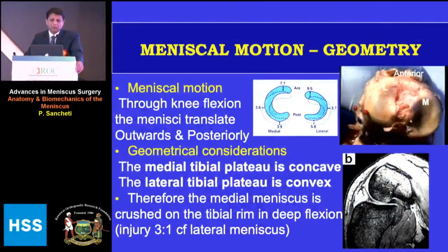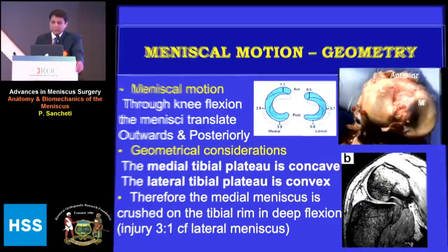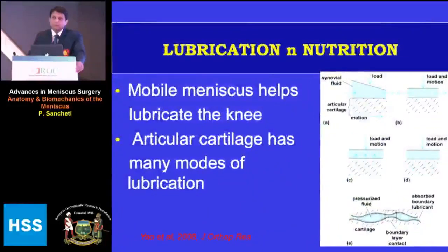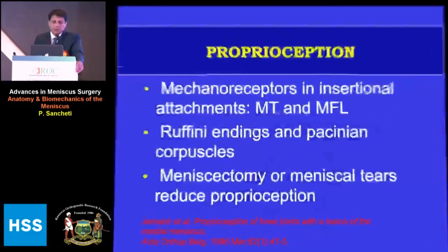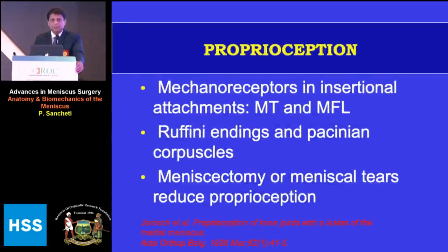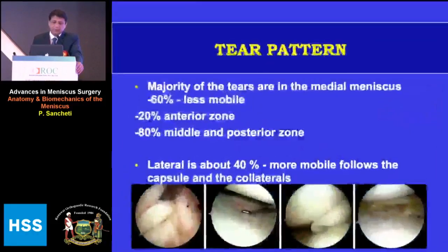During knee flexion, the meniscus translates outward and posteriorly. The medial tibial plateau is concave and the lateral tibial plateau is convex, increasing congruity. The menisci also aid in nutrition by helping lubricate and spread synovial fluid, thereby nourishing the articular cartilage. They have mechanoreceptors which assist in proprioception and joint sense.